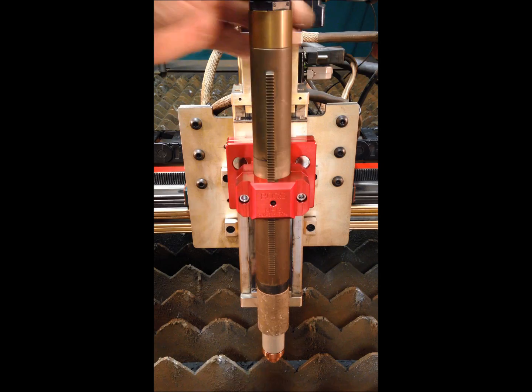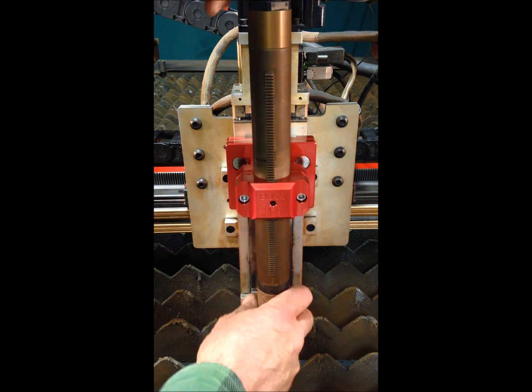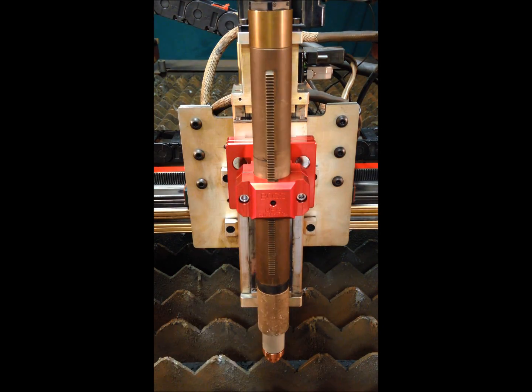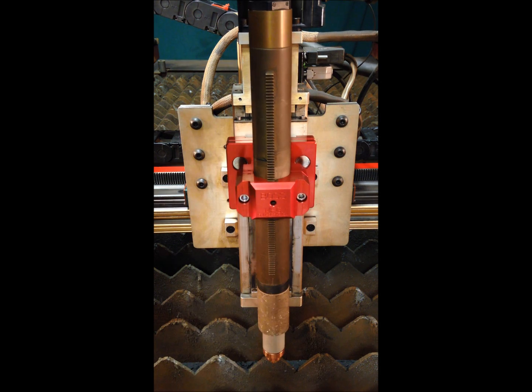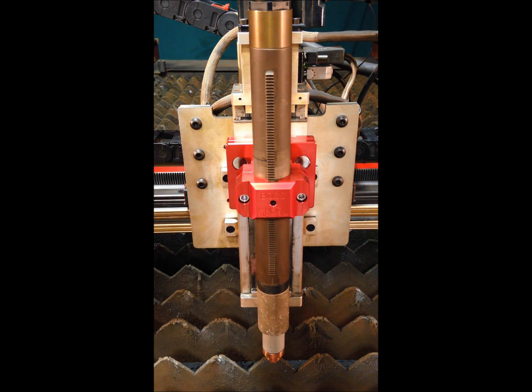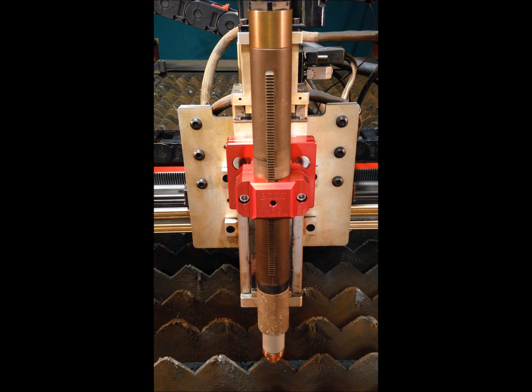Our Plasma Torch Protection System torch holder provides 58 pounds of holding force. In testing, we have found that 58 pounds of holding force works best with our CNC torch holder.